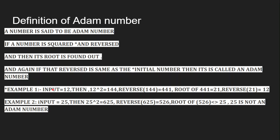For example, you are giving the input number 12. What is 12 squared? 12 squared is 144. Now reverse this number. The reverse of 144 is 441. And the square root of 441 is 21. Now we can see the number you have taken is 12, and the reverse of what you got is 21.